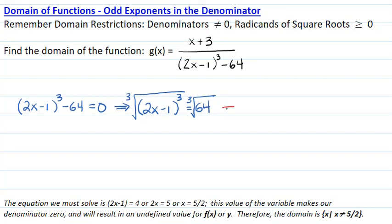The equation we must solve is 2x - 1 equals the third root of 64, which is 4. And we move the 1 to the right, so 2x equals 5, or x equals 5/2.